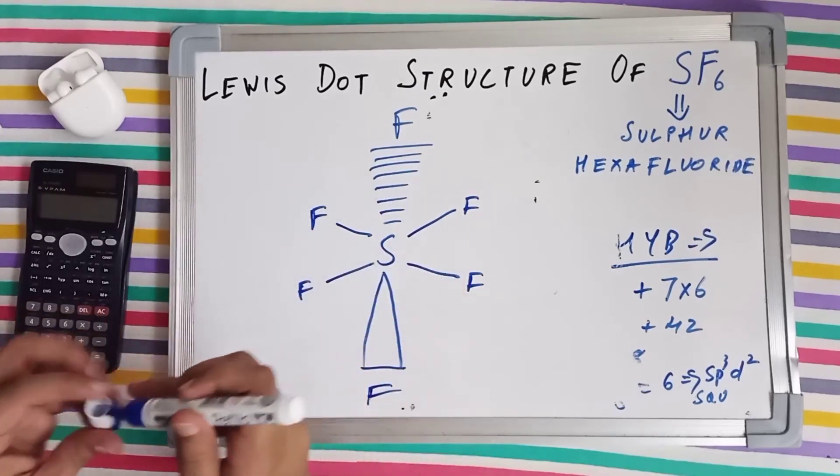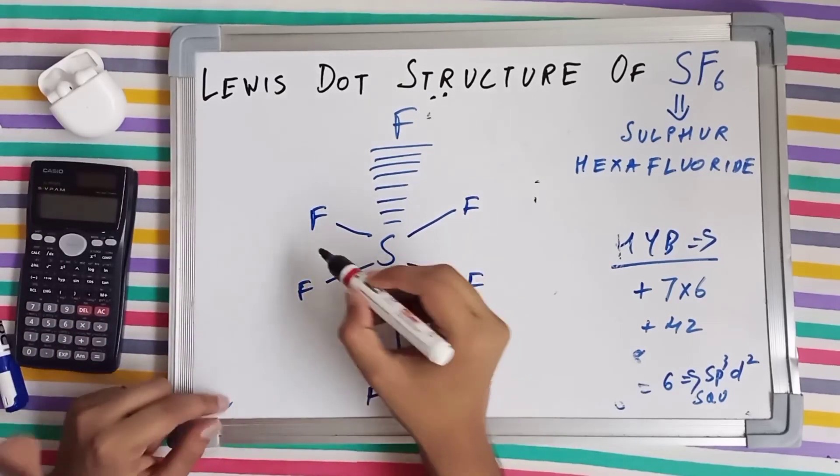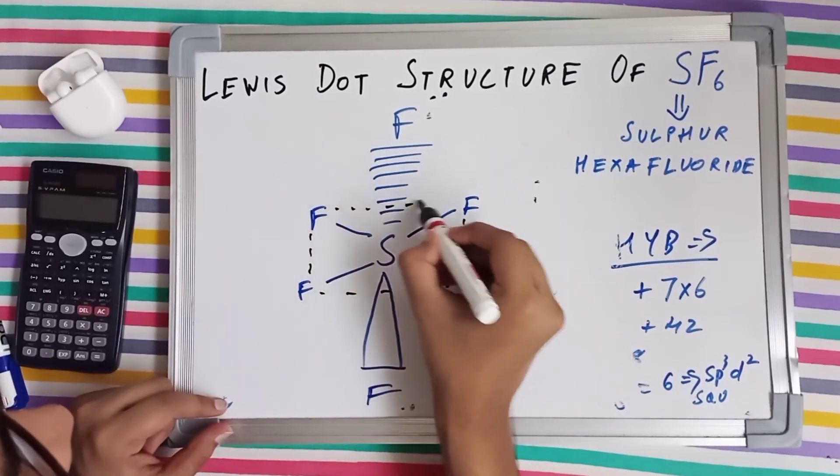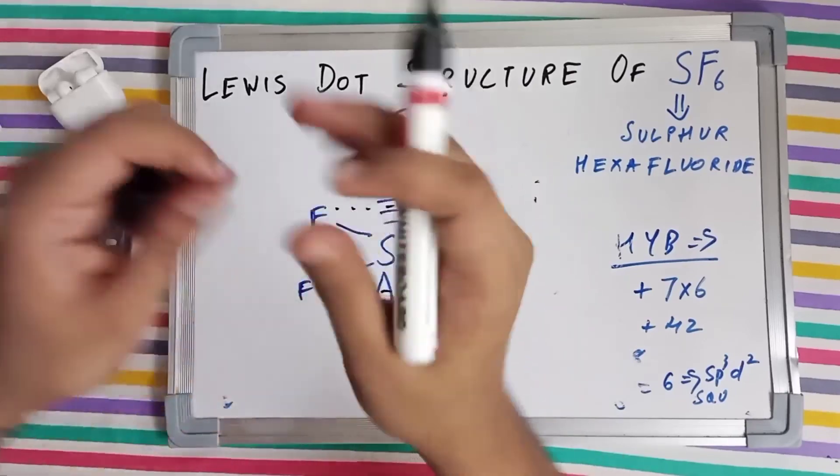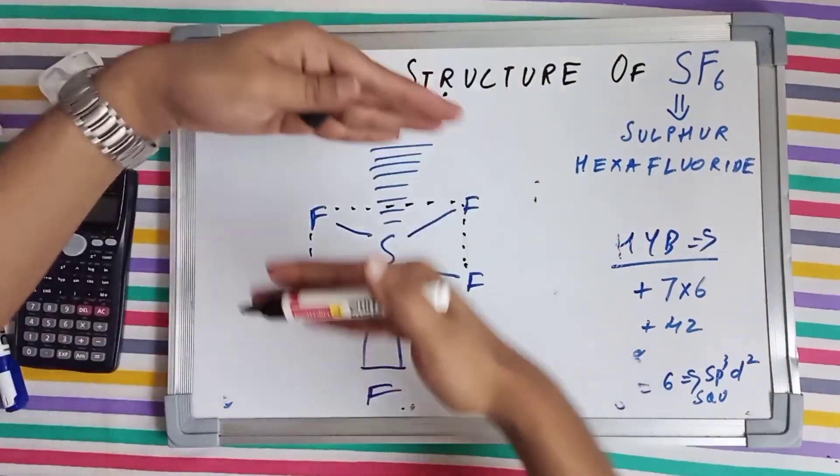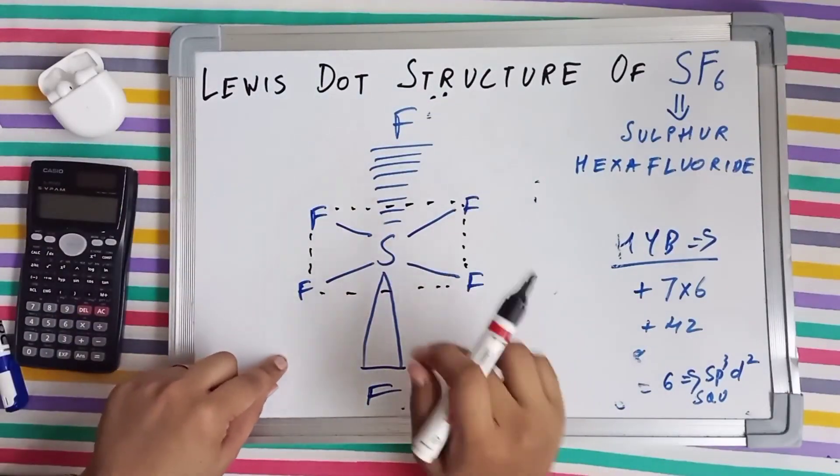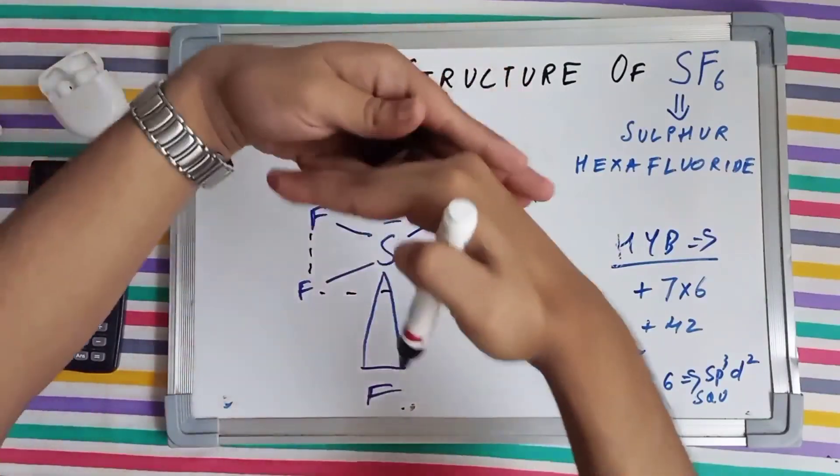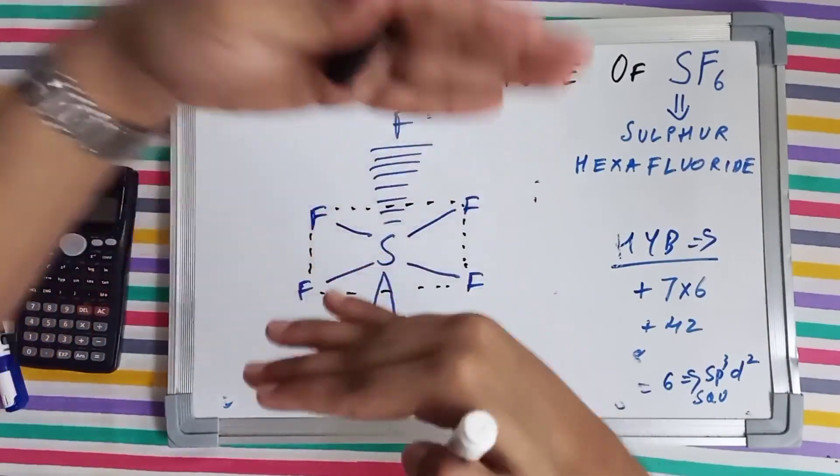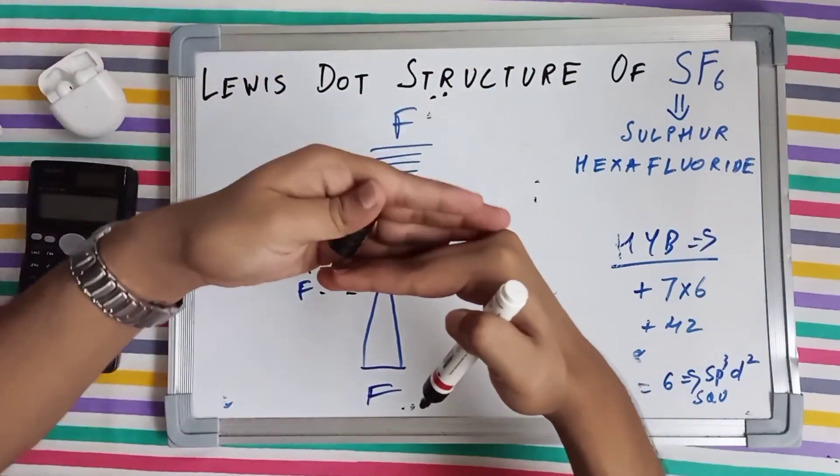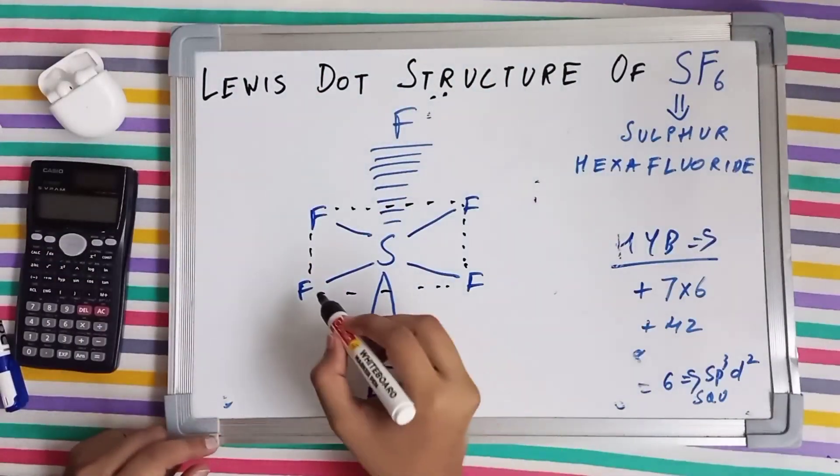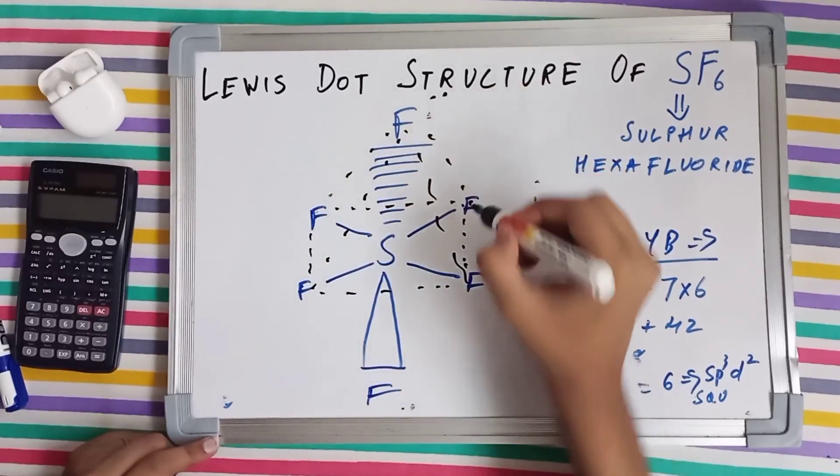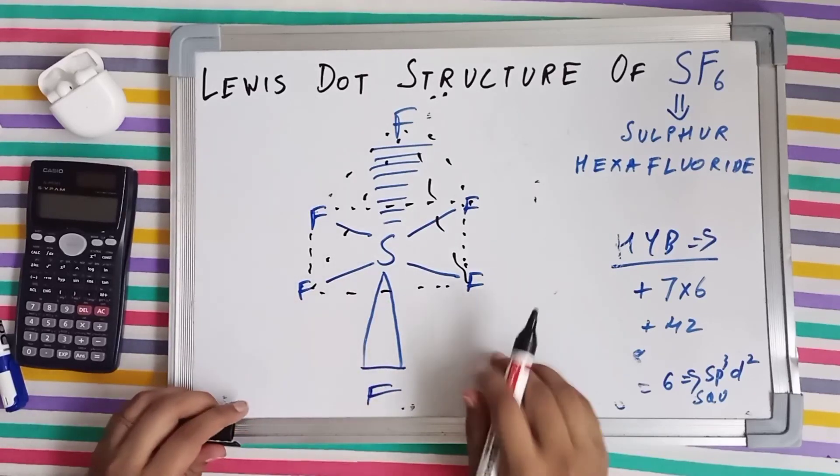So it is a square and also a pyramid. This one is a square above. This is a pyramid having four faces and below this sulfur is also a pyramid having four faces. So there's a pyramid here and similarly, a pyramid below the plane of the surface.